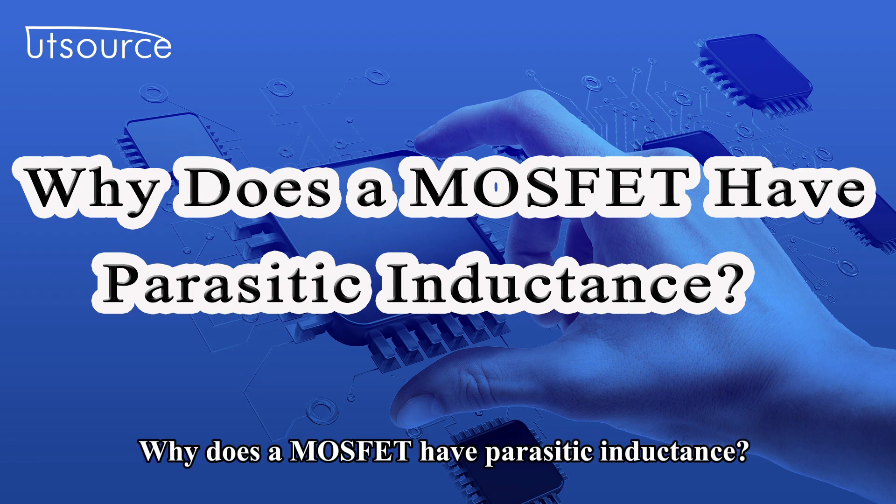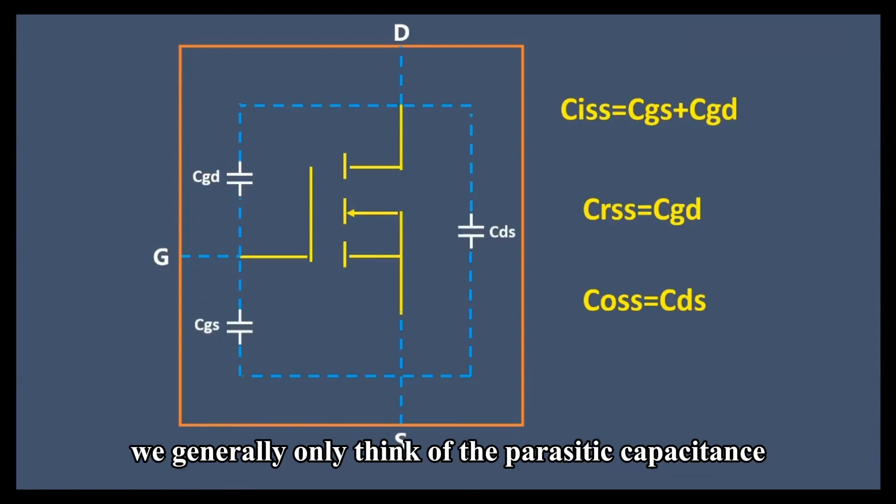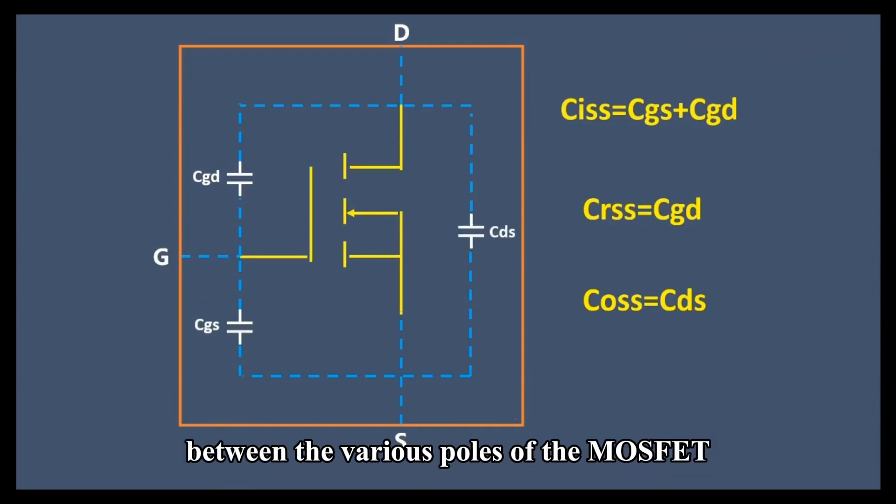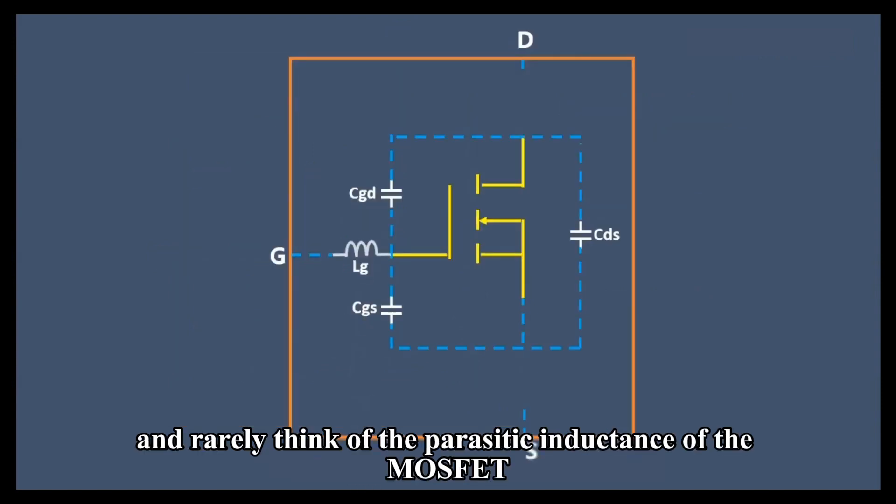Why does a MOSFET have parasitic inductance? When it comes to the parasitic parameters of a MOSFET, we generally only think of the parasitic capacitance between the various poles of the MOSFET and rarely think of the parasitic inductance of the MOSFET.